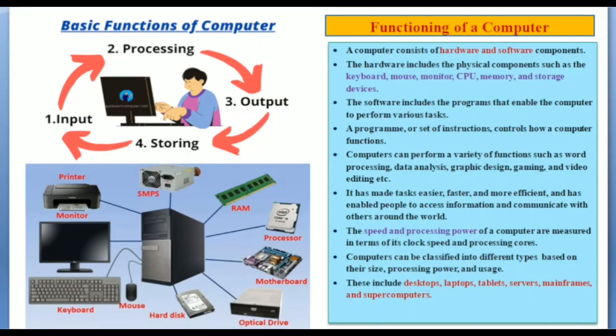Coming to the basic functioning of a computer, it consists of four stages. First we need to put input to the computer system. Then the given input is processed by the computer and we are getting output from the processed input. And the output we are getting from computer can be stored in memory devices. So these four steps consist the basic functioning of computer.